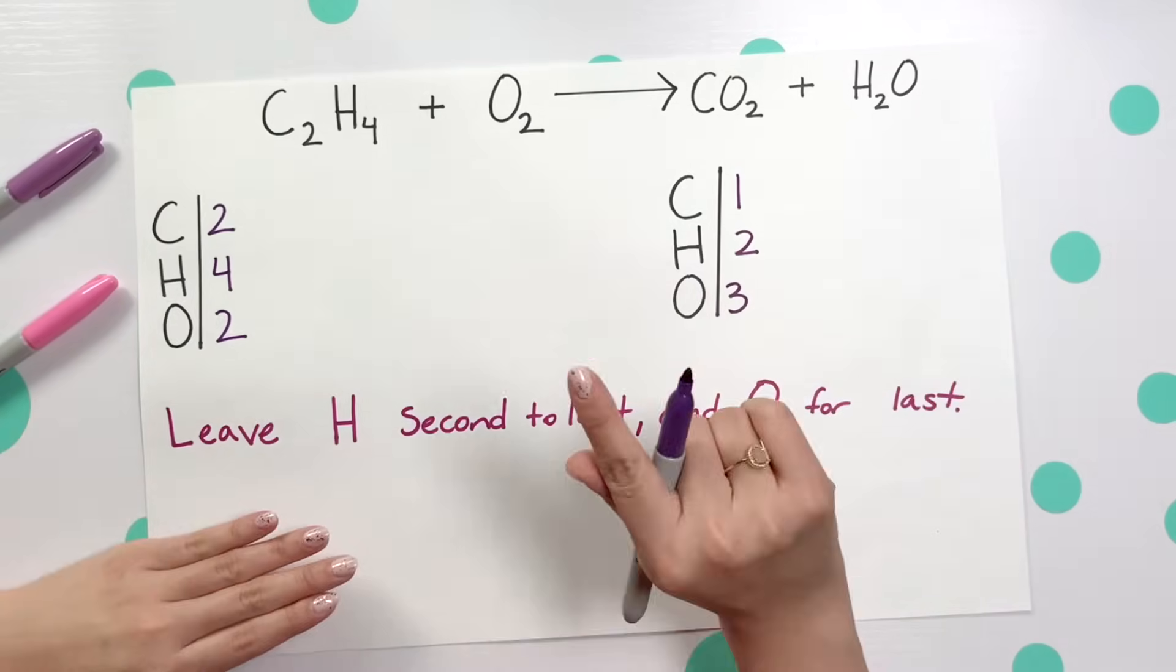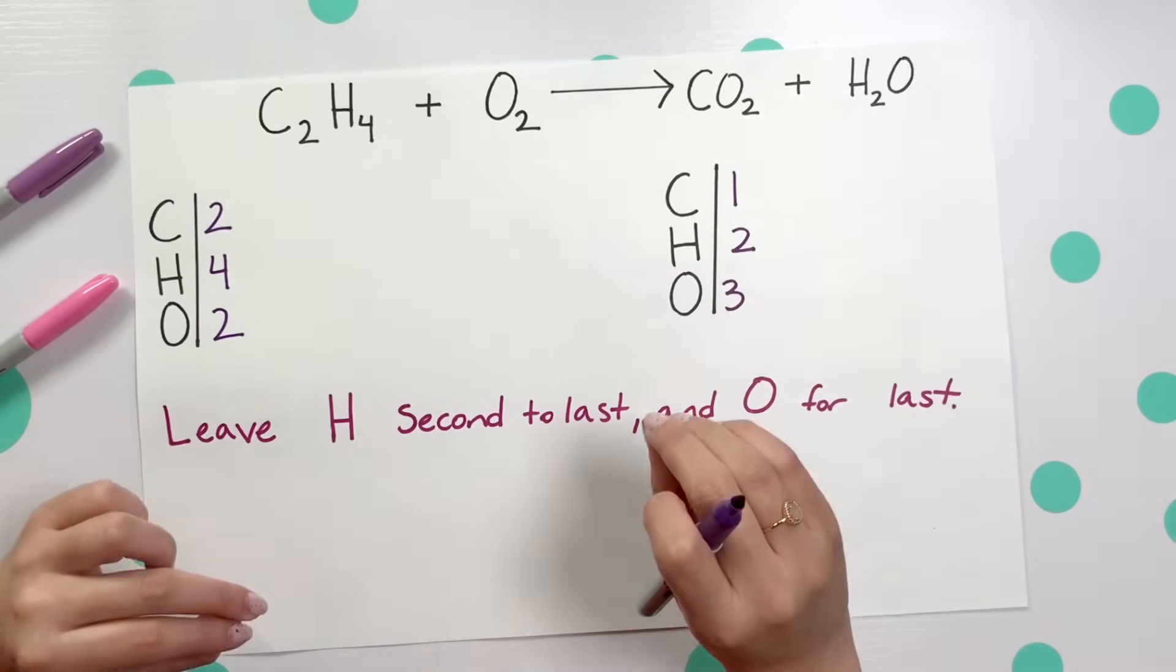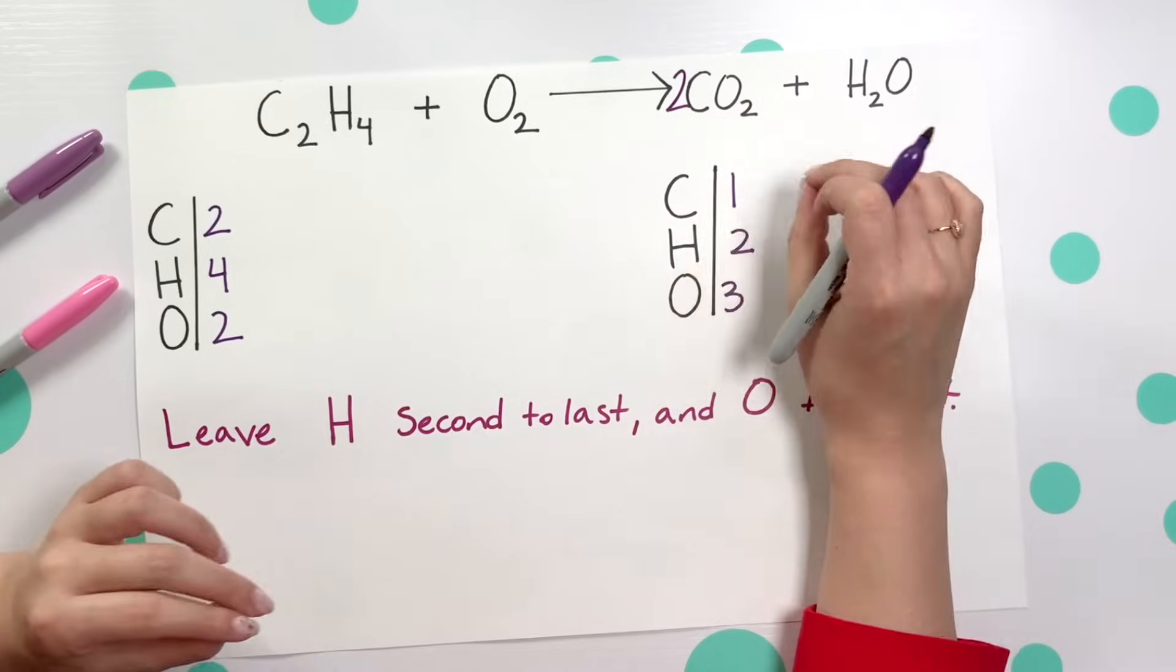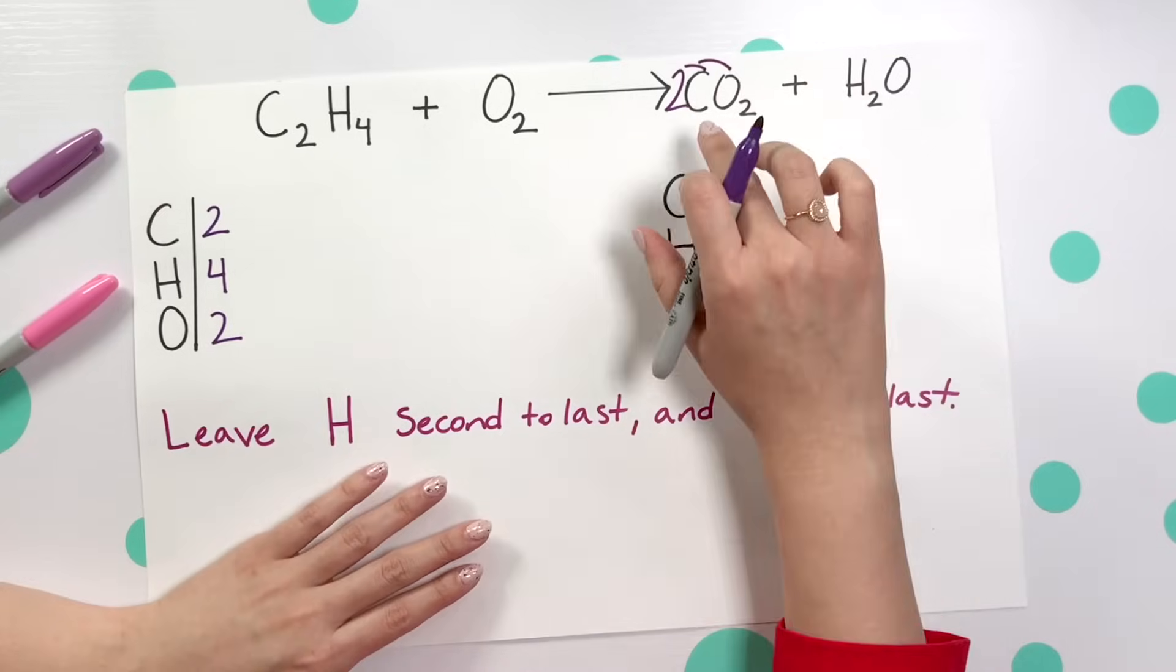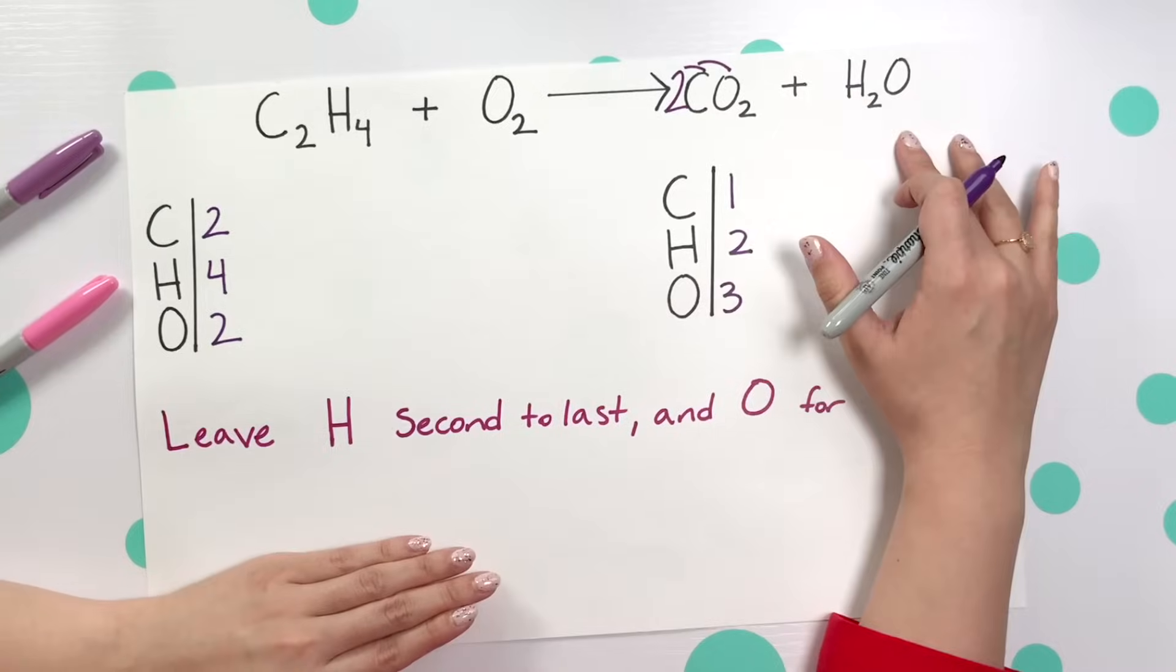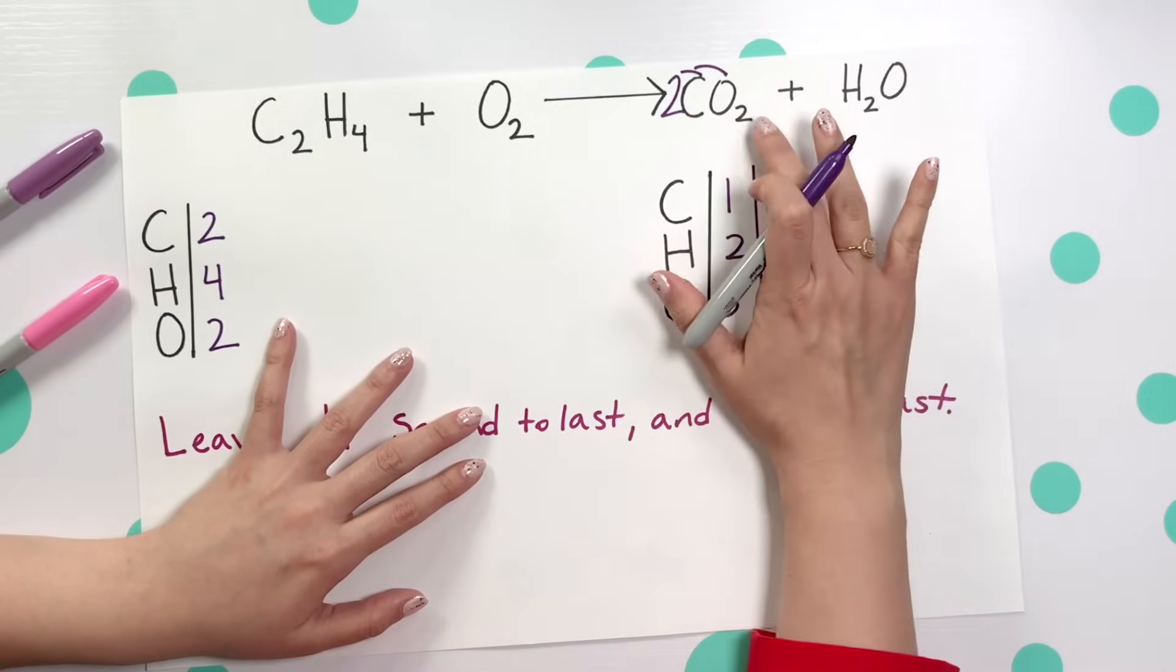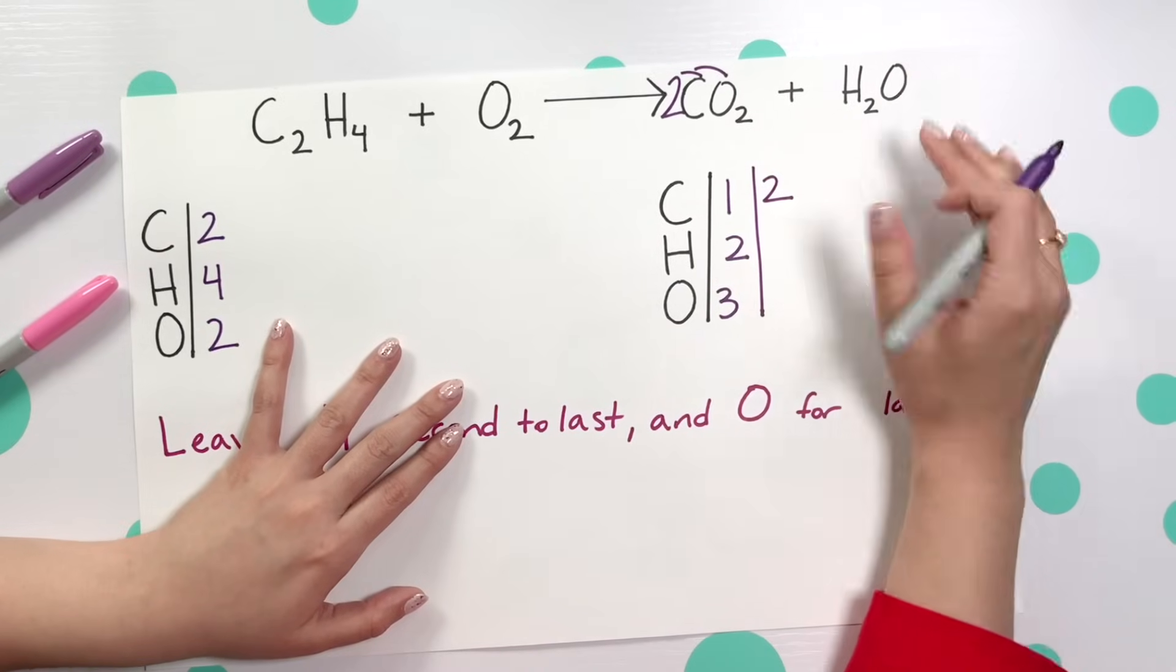Looking at carbon, that's where I want to begin because remember hydrogen is second to last then oxygen. So for carbon I can place a two right in front of that CO2 compound and this affects our carbon and our oxygen. I'm going to recount and see what's affected by this two. There's actually two carbon on our product side and two times two so four. Four plus this other one oxygen making it five.